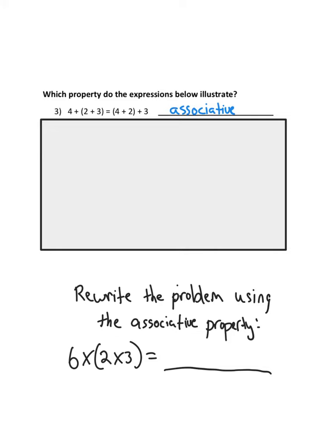All right, let's see if you got this one right. So when you rewrite a problem like this using the associative property, one of the things is you don't want to change the order of the numbers. So I still have 6 × 2 × 3. The only thing I want to change is where those parentheses are. So instead of them being around the 2 and the 3, I'm going to put them around the 6 and the 2.